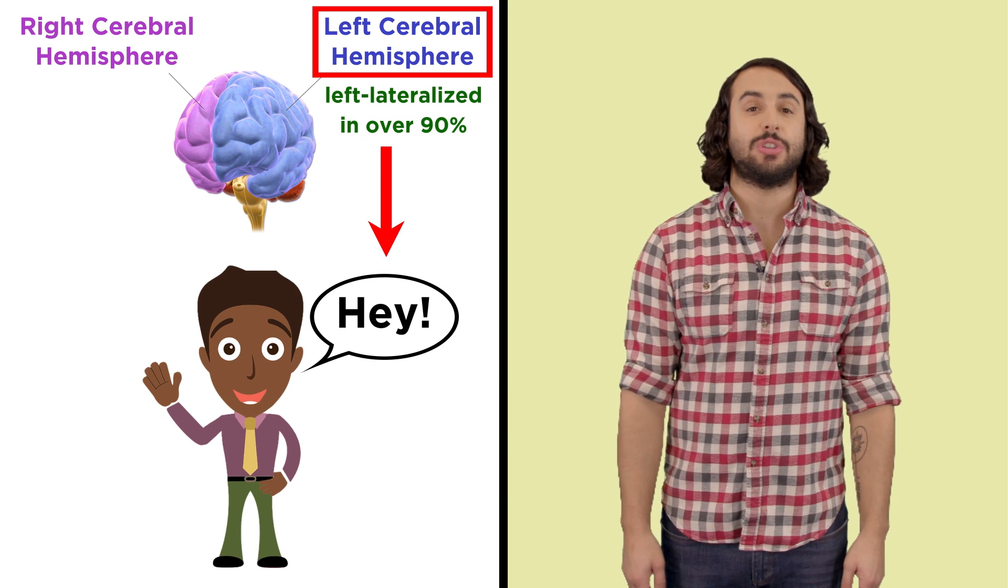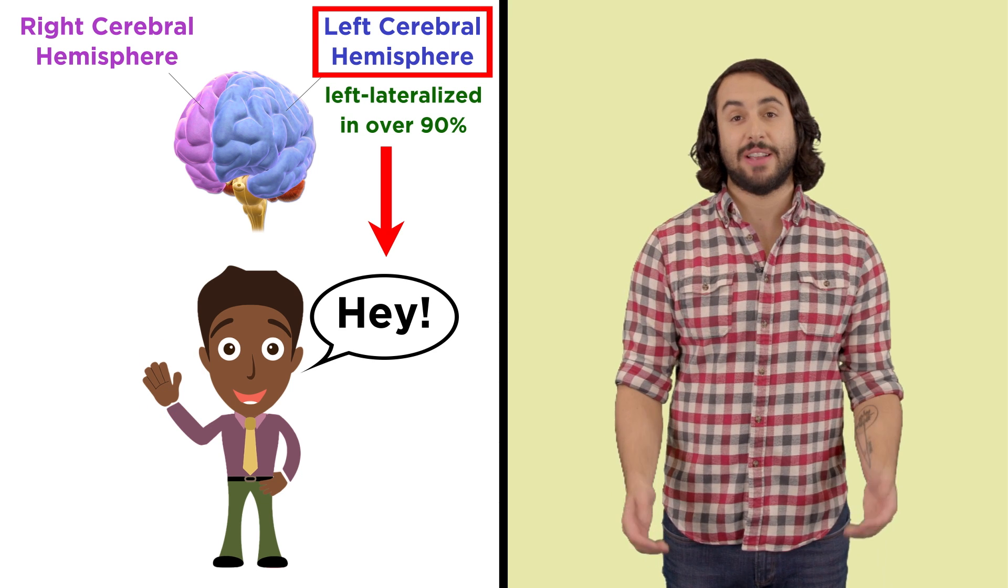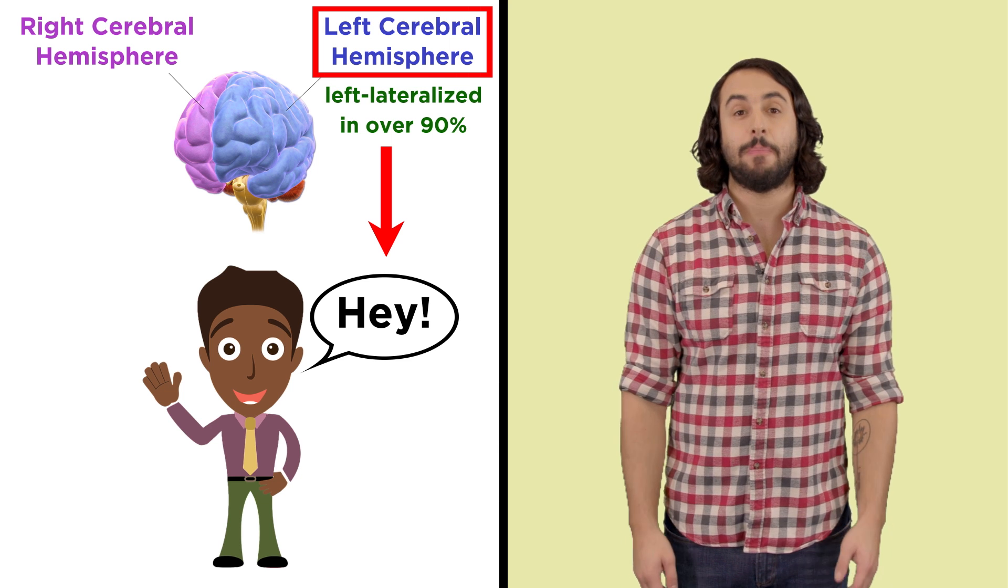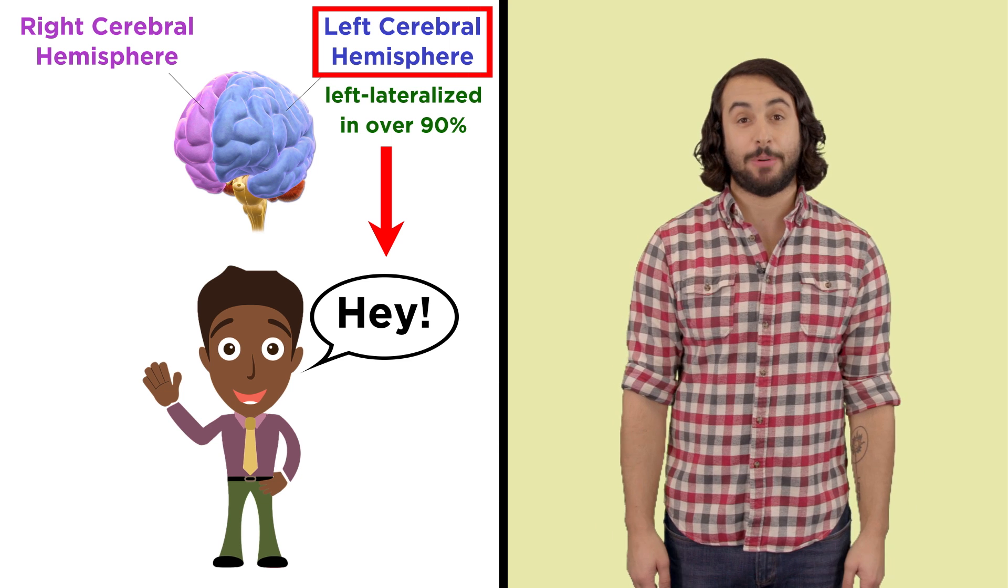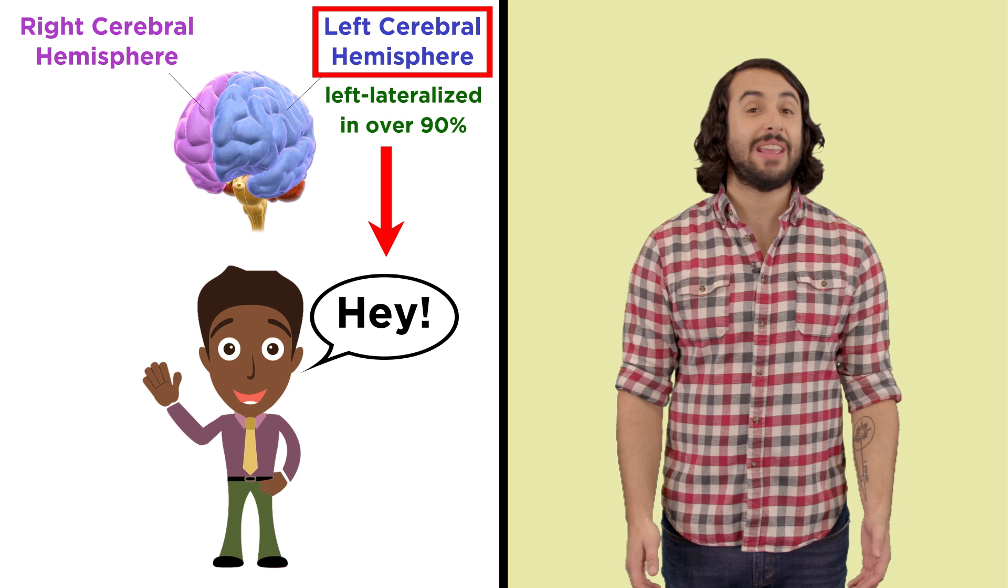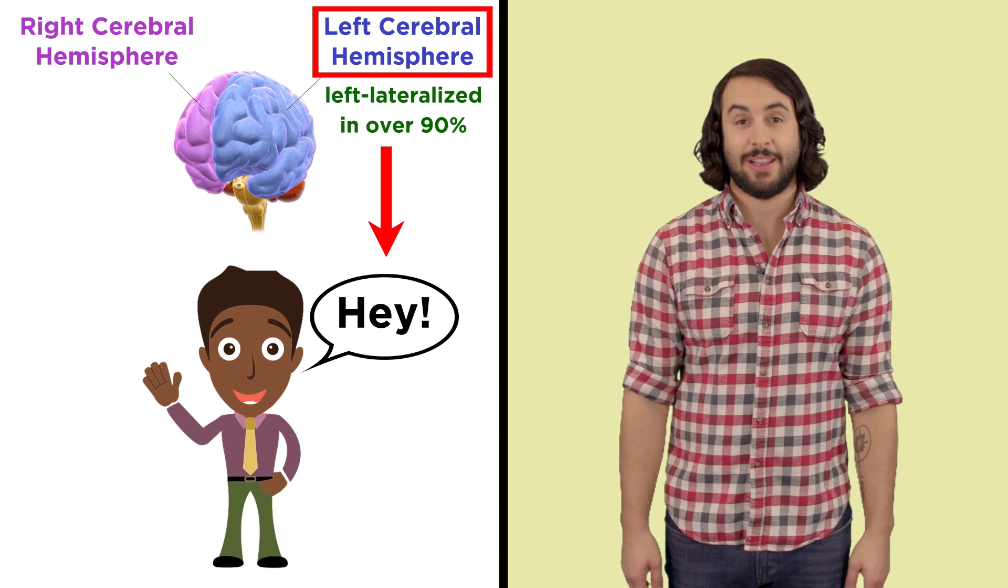Moreover, language skills are left-lateralized, or largely controlled by the left hemisphere, in over 90% of people. That includes 78% of people who are not right-handed.